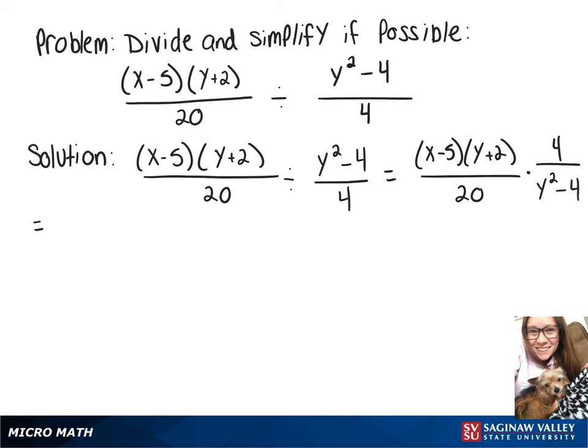And then on top we'll have 4 times x minus 5 times y plus 2. And on bottom we'll have 20 times y squared minus 4.